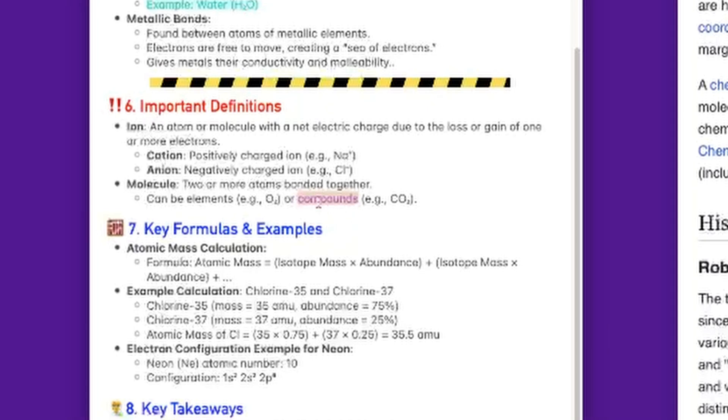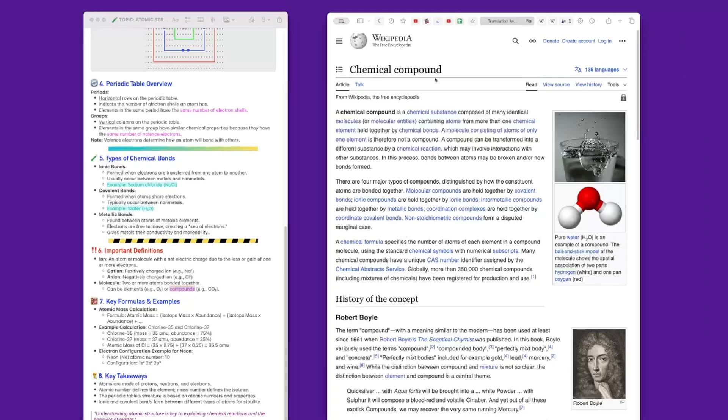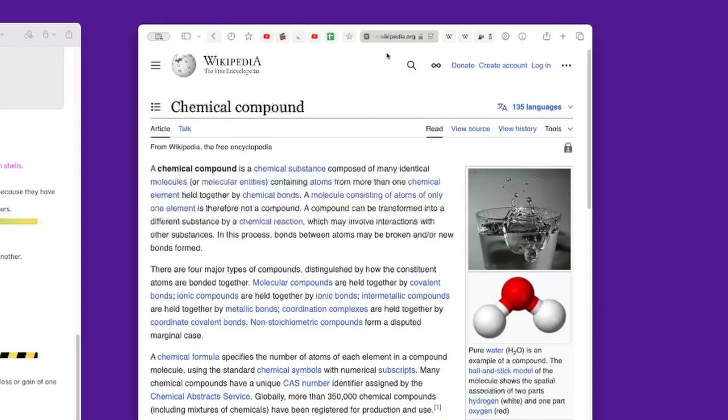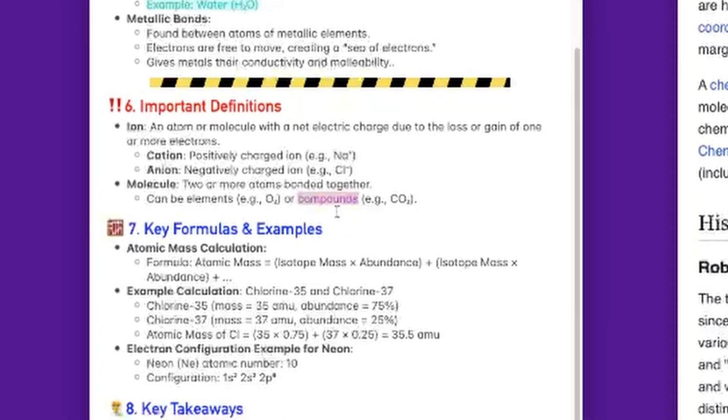The first type of links we're going to add are external links. There is for example here this word that we highlighted in the previous episode about compounds. And of course there are lots of things you could say about compounds that maybe don't fit specifically this note. So we can have an external link for additional information. On this side I've got Safari opened on a Wikipedia article which is specific about compounds. I can copy the link to this page into this note. I'm going to select the link and copy it.